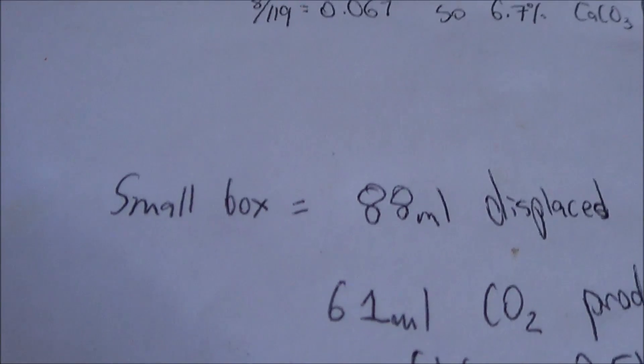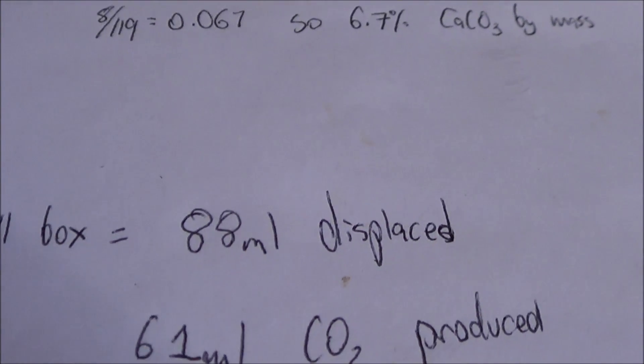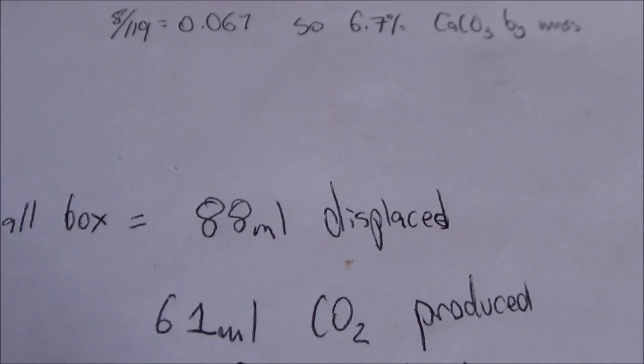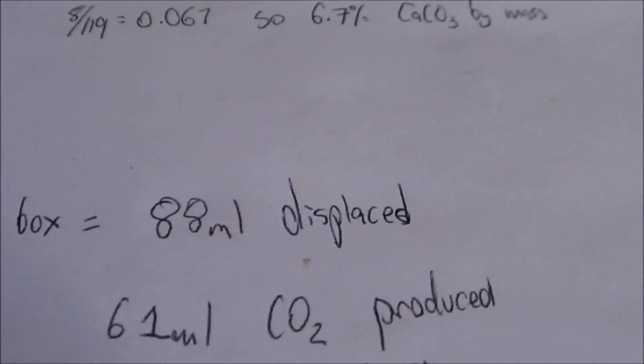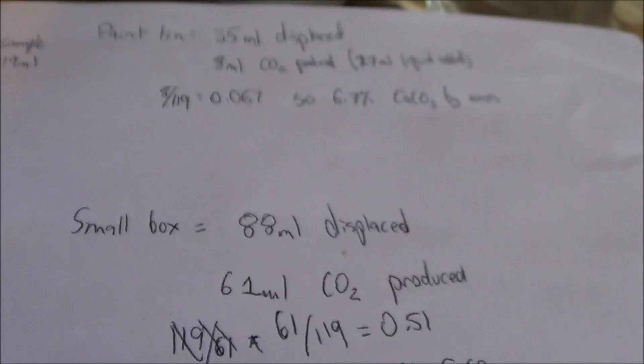If we go down to our small box, we'd displace 88 mils in the end. So, it means 61 mils of CO2, which means about 50% calcium carbonate, which is quite a lot.